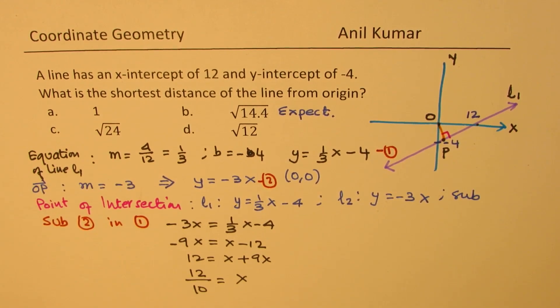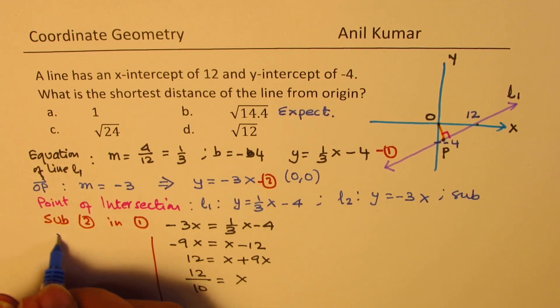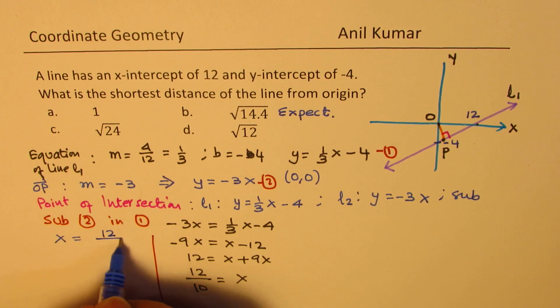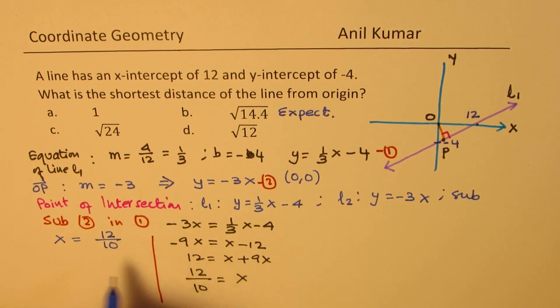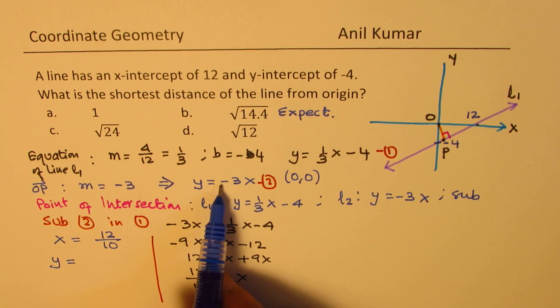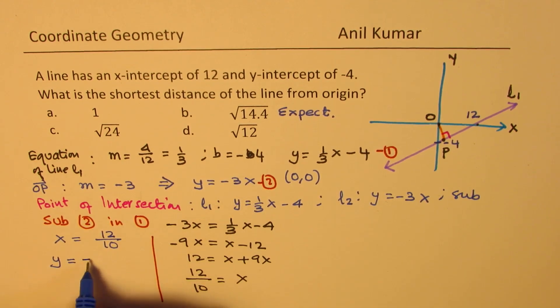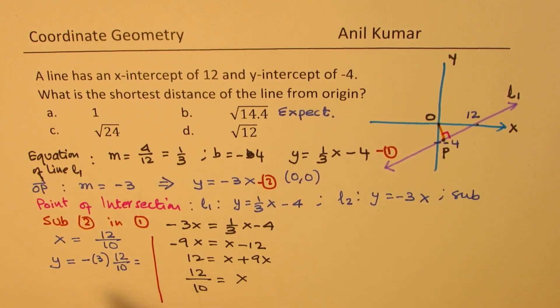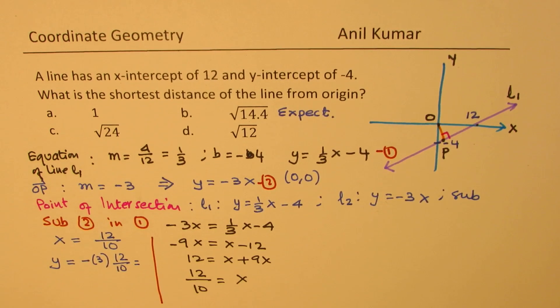So, once we get the value of X, we can get the value of Y. What we have now is X equals to 12 over 10. You could write 1.2 also. And Y should be equal to what? Well, Y is minus 3 times X. So, that is minus 3 times 12 over 10. Let's keep it like this, minus 3, 12 over 10.